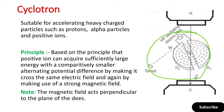An important point is that the magnetic field acts perpendicular to the plane of the Ds. When D1 is at positive potential and D2 is at negative potential, a positive charge is produced in the gap. This positive charge can be a proton, alpha particle, or positive ion.